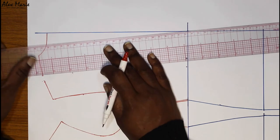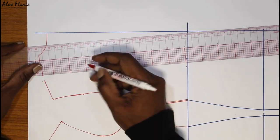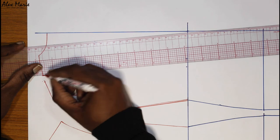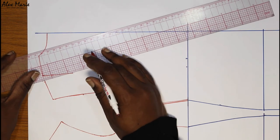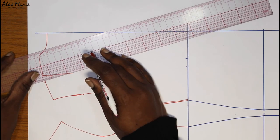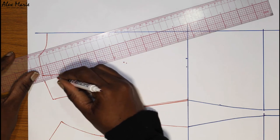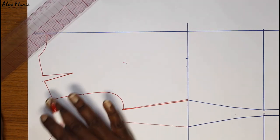Draw in my shoulder darts. I didn't do any changes there. Okay. Now, we're going to join the waist dart.